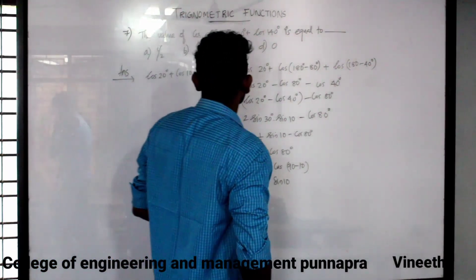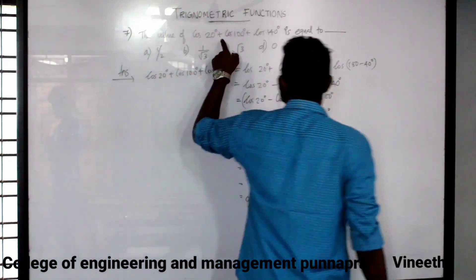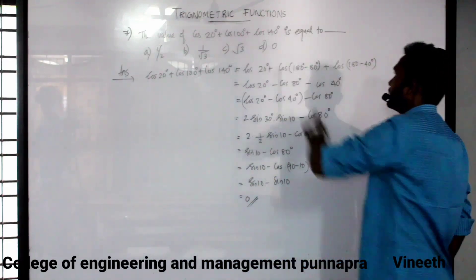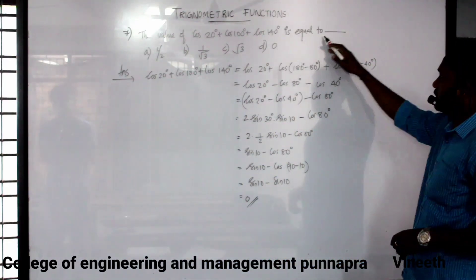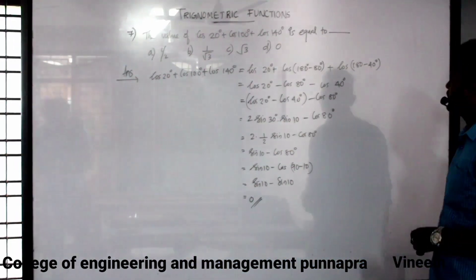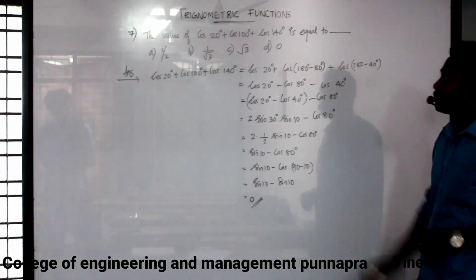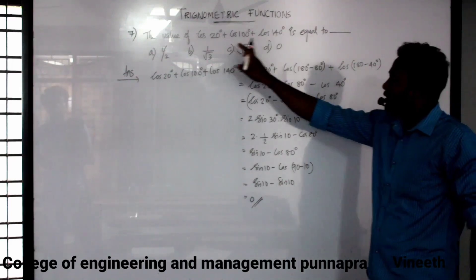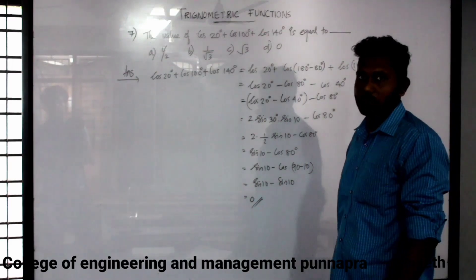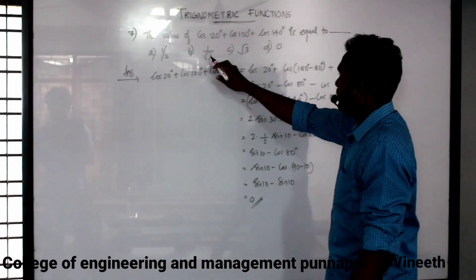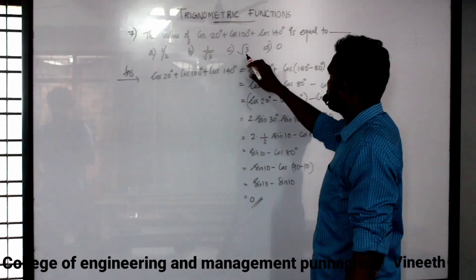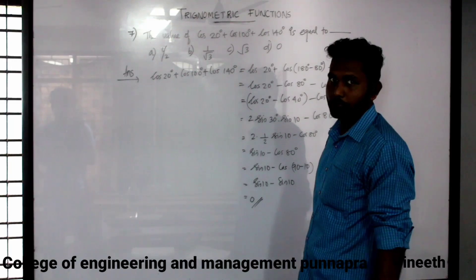The value of cos 20 degree plus cos 100 degree plus cos 140 degree equals what? The options are 1 by 2, 1 by root 2, root 3, and 0.